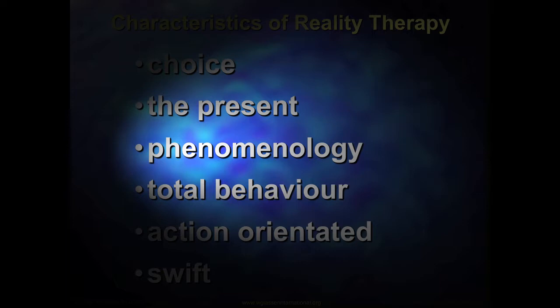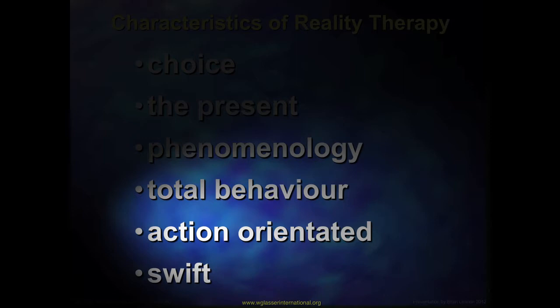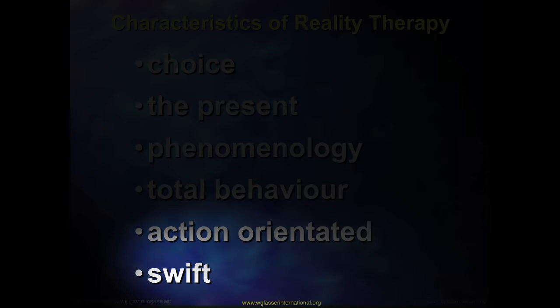The concept of total behaviour — the four inseparable components — is absolutely central to Reality Therapy. When a person is depressing, it is part of their physiology, thinking, doing, and feeling. We focus on which components we can help them change, and the easiest to change are doing and thinking; feeling and physiology will normally change if the other two change. Reality Therapy is very action-oriented, looking for change, planning, and so on. It tends to be very fast compared with some other therapies, moving forward to find new behaviours and choices that help the person lead a more satisfying life.